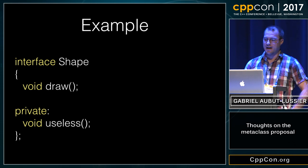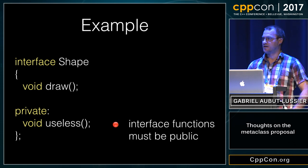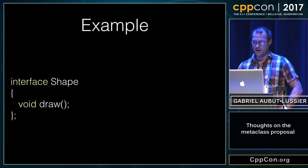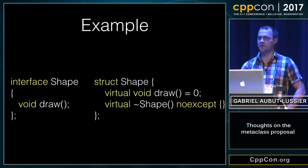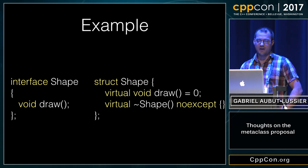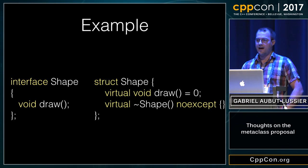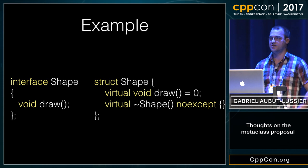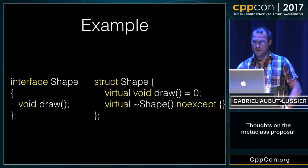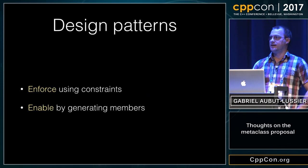You've seen this example, except for the private part which doesn't compile — fortunately. And if we shorten it, we can also get the generated class like this. You can see that after applying the constraints preventing you from having a private member function, it's actually generating a virtual destructor on your behalf, and it's also transforming your member functions to make them pure virtual by default.